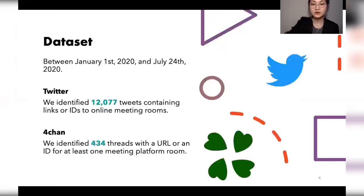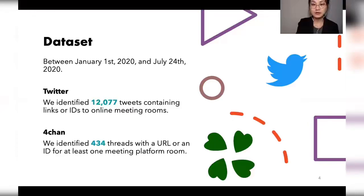We monitored links to 10 online meeting services like Zoom, Google Meet, Cisco Webex, and Microsoft Teams. We focused on two online services to collect posts containing online meeting information: a mainstream social network like Twitter, and a fringe web community like 4chan. Between January and July 2020, we identified 12,000 tweets and 434 4chan threads discussing online meeting rooms.